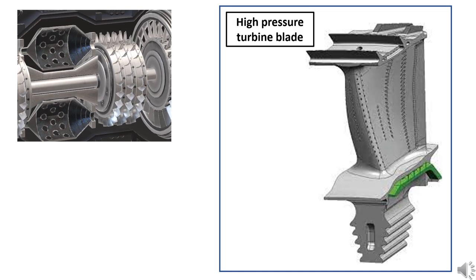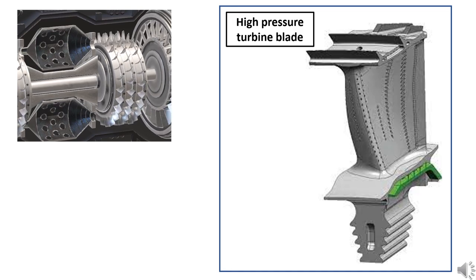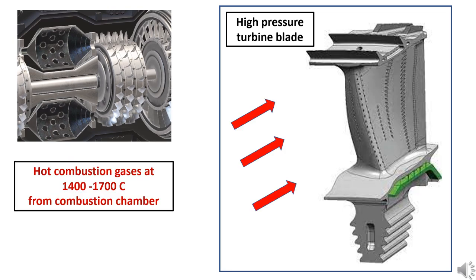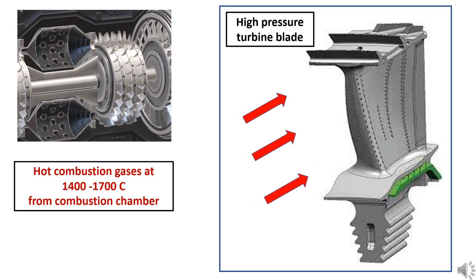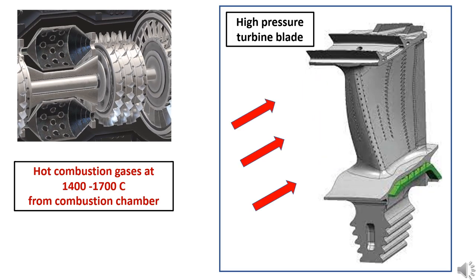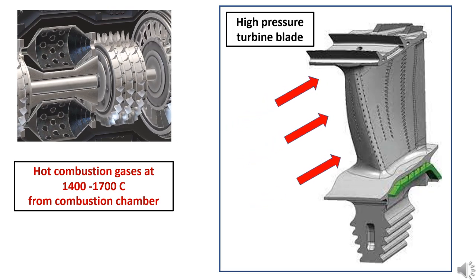The high pressure and high temperature gases from the combustor hit the high pressure turbine blades. The temperature of the gases from the combustor is about 400 to 600 kelvin hotter than the melting point of the turbine blade material.